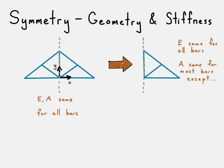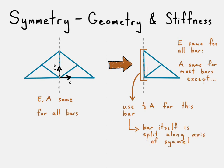In this case, we chose the right side. And notice that the elastic modulus is still the same for all the bars. Cross-sectional area is the same for all the bars with one exception. And that is the bar lying right along that axis of symmetry.